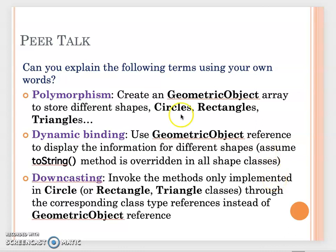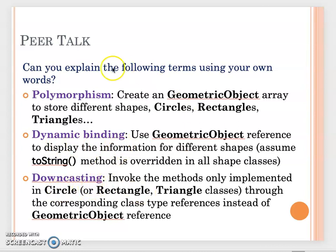In the first few videos we talked about polymorphism, dynamic binding, upcasting, and downcasting. In this peer talk, I want you to think about those concepts again — use your own words to explain polymorphism, dynamic binding, and downcasting, and give examples for yourself. This is also good practice for discussion posts.